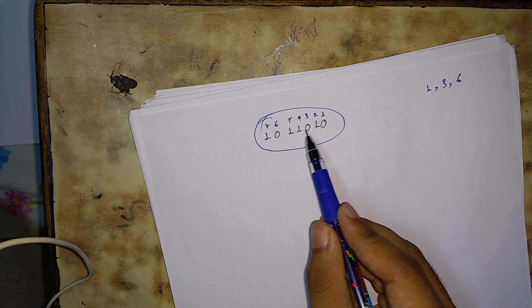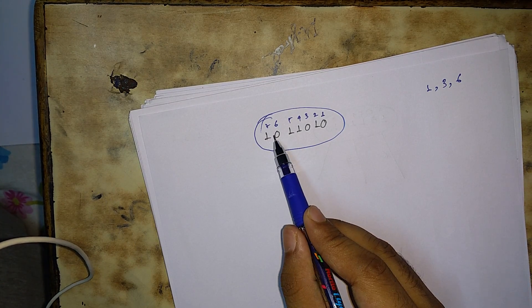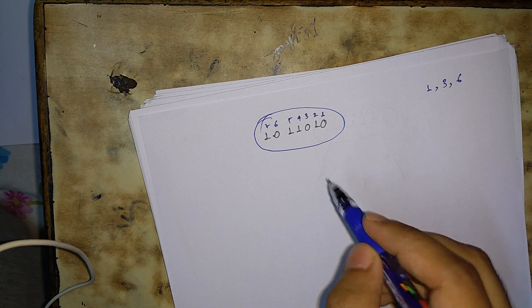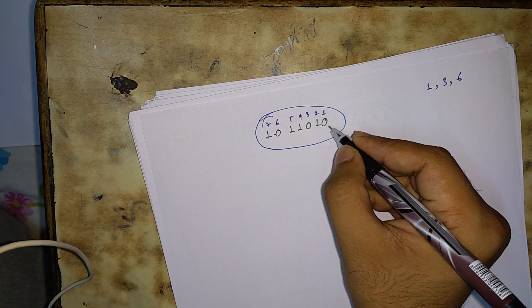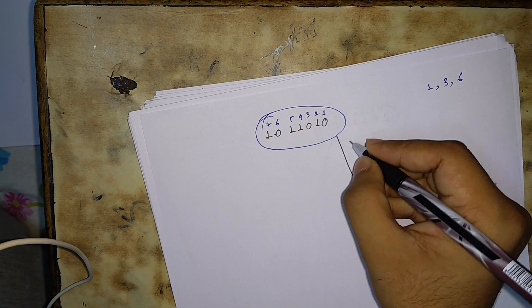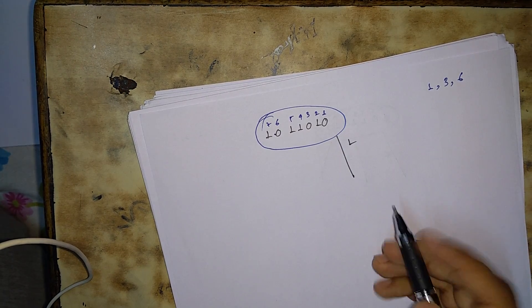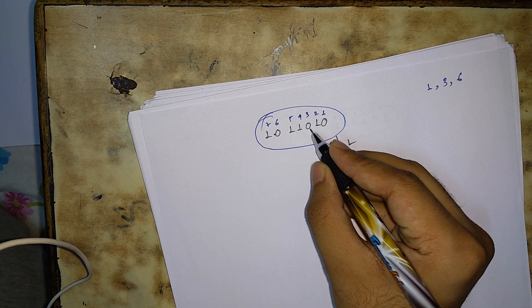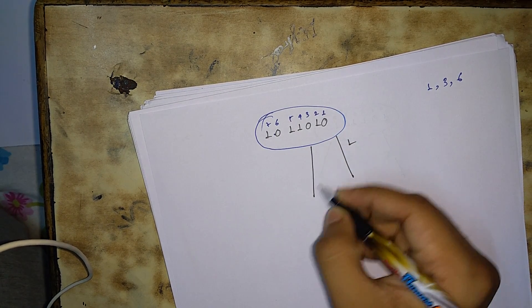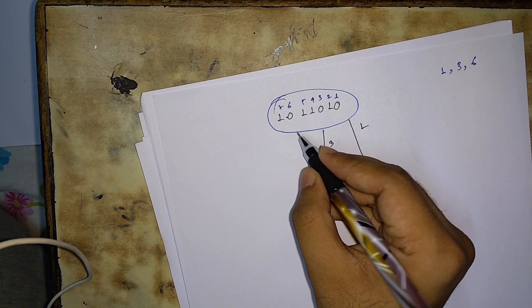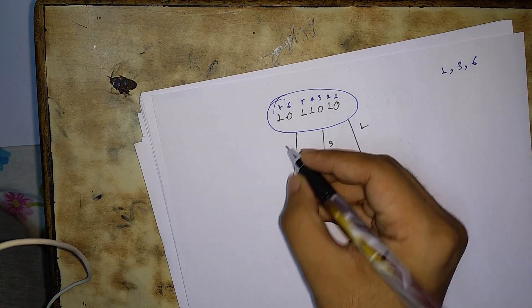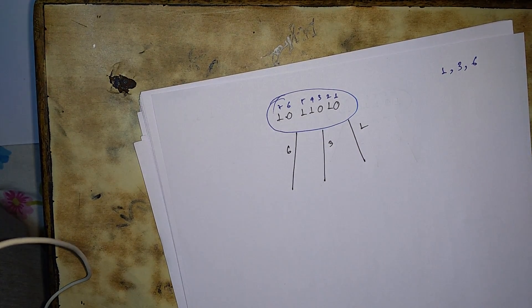The concept is that the places where there are zeros, a shifting will occur. If there is a zero in position one, there will be a one-bit shift. If there is a zero in position three, there will be a three-bit shift. If there is a zero in position six, there will be a six-bit shift.